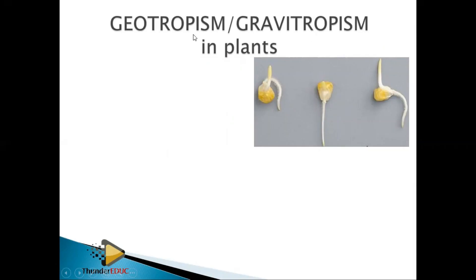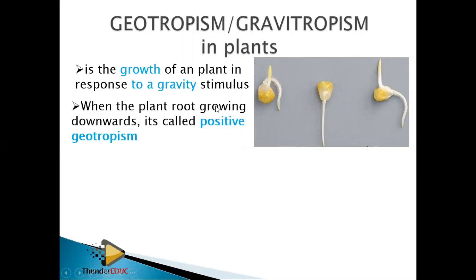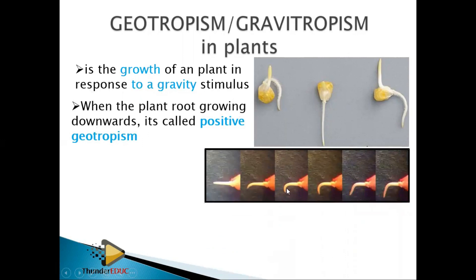What about geotropism? Sometimes it's called gravitropism. Geo means crust in science, and gravity is gravity — both terms refer to growth pulled towards gravity. Geotropism is the growth of a plant in response to gravity, meaning the stimulus this time is gravity. When a plant root grows downwards it is called positive geotropism — it is positively geotropic, meaning it is growing towards gravity.